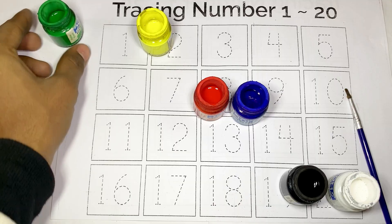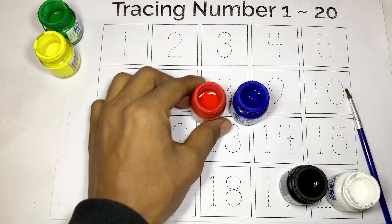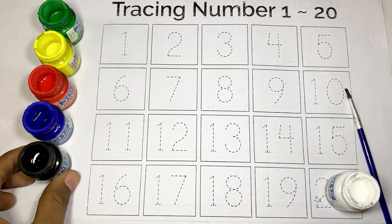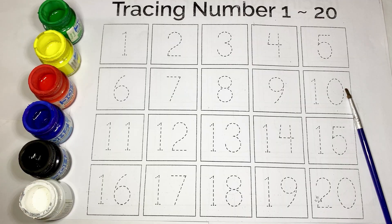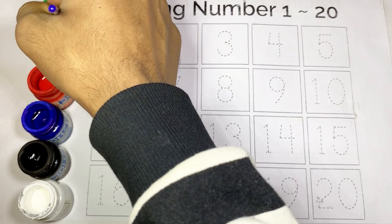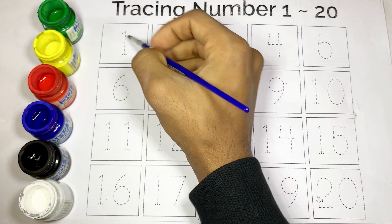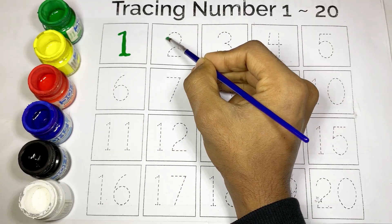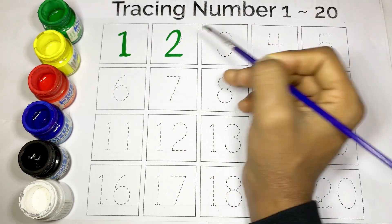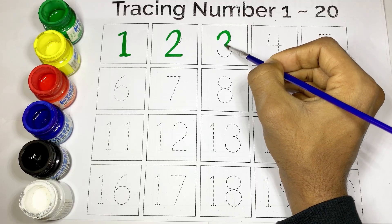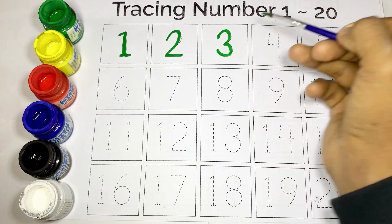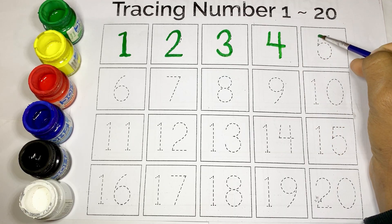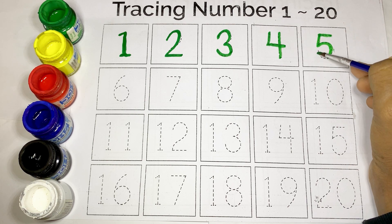Green color, yellow color, red color, blue color, black color, and white color. Numbers one to five use green color. This is one, O-N-E, one. This is two, T-W-O, two. This is three, T-H-R-E-E, three. This is four, F-O-U-R, four. This is five, F-I-V-E, five.